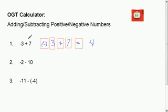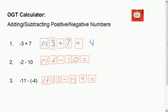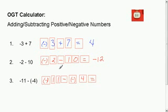With this negative, it is its own keystroke. Please press pause and try the next two problems. After you have plugged them in and gotten your answers, press play and we will see if you get the answer correct. The keystrokes are: negative 2 minus 10 equals, and the answer will be negative 12. Then negative 11 minus negative 4 equals, and you will get negative 7.